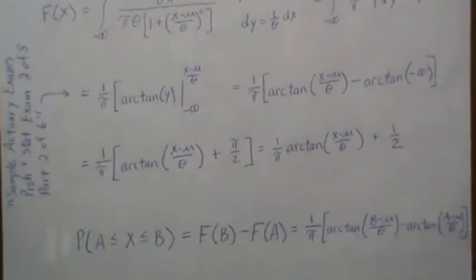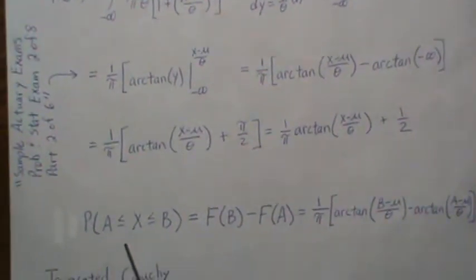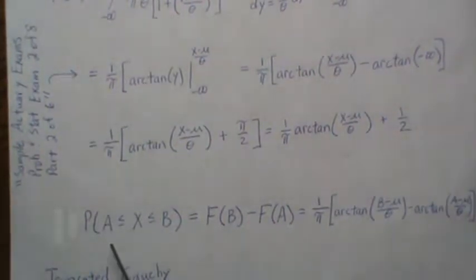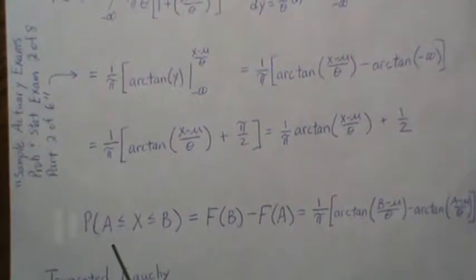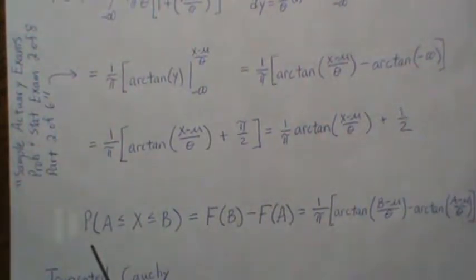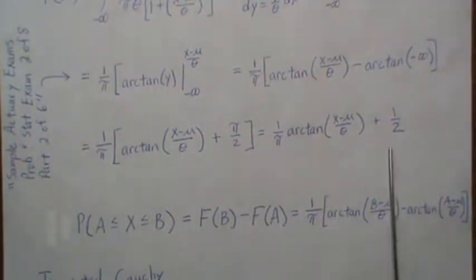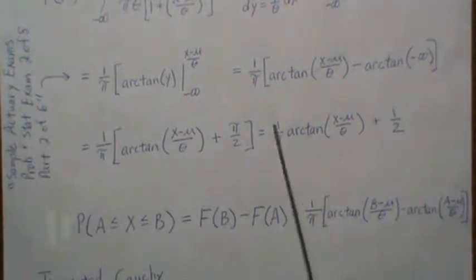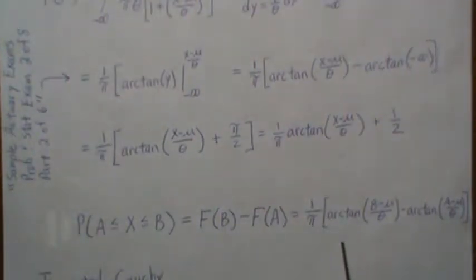And the reason we need that is for this probability. The probability that X, being a Cauchy, between two numbers A and B. And they can be any real numbers. You want B strictly greater than A. And then this probability is this probability. And so it's the difference of this with A and B put in the right spot.